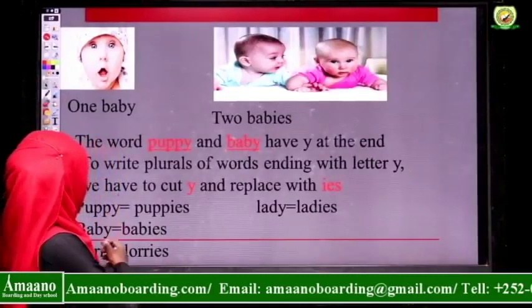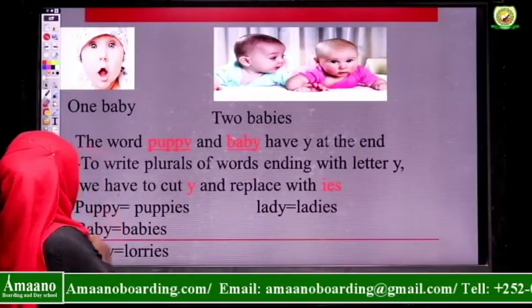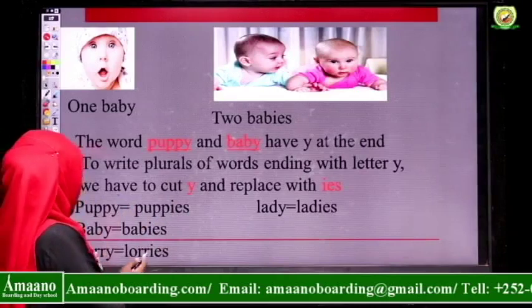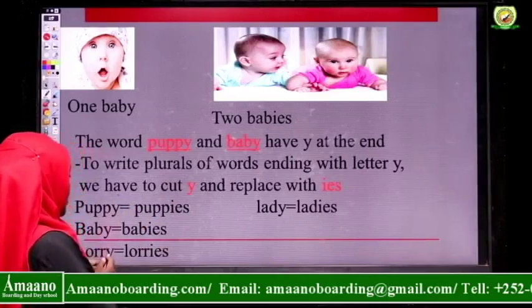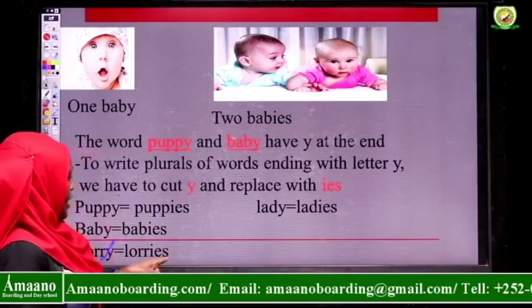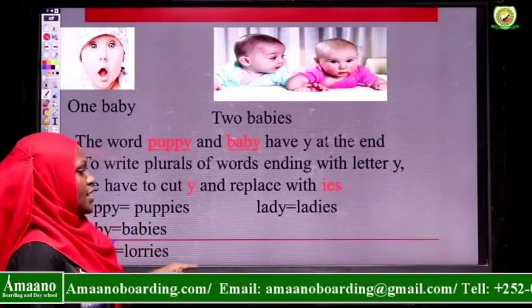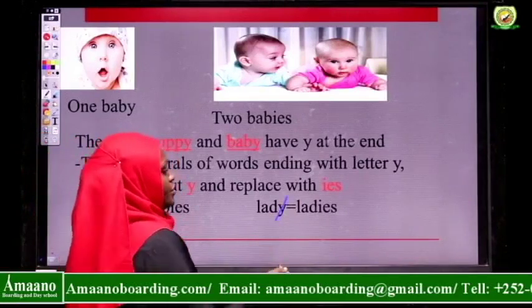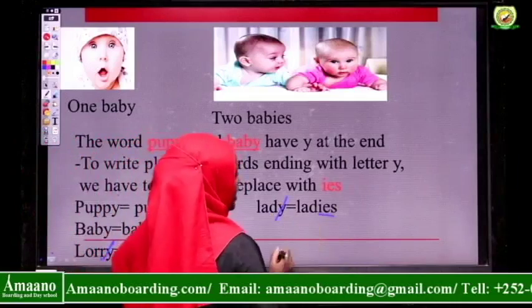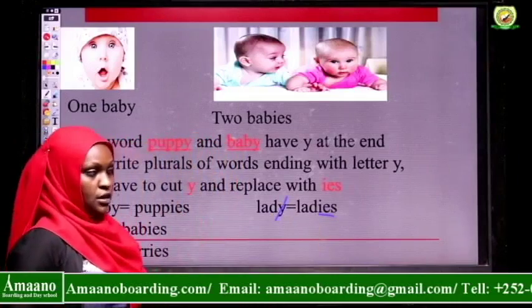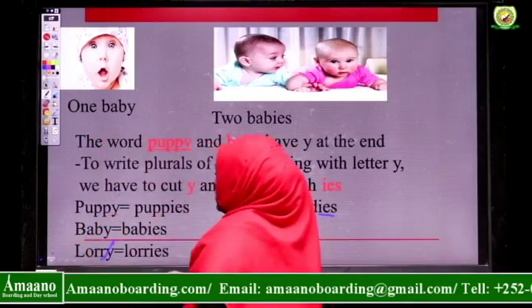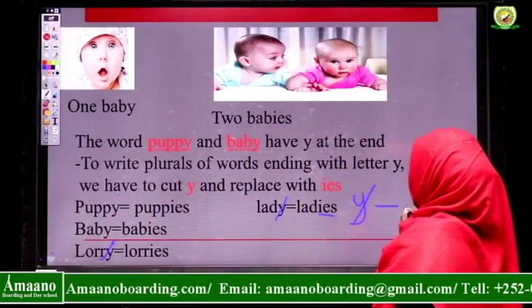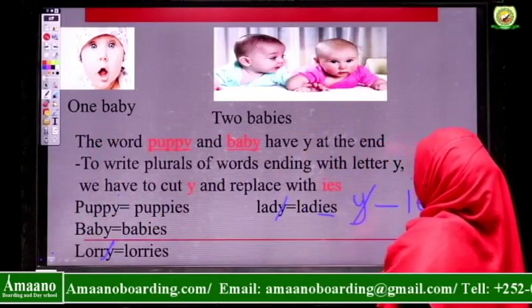We have more examples. We have baby — babies. Puppy — puppies. Baby — babies. The word lorry is ending with letter Y, so you have to remove that Y and replace it with I-E-S. We have the word lady — cut letter Y, then replace it with I-E-S. So to write the plural of words ending with the letter Y, we do away with the letter Y and add I-E-S.